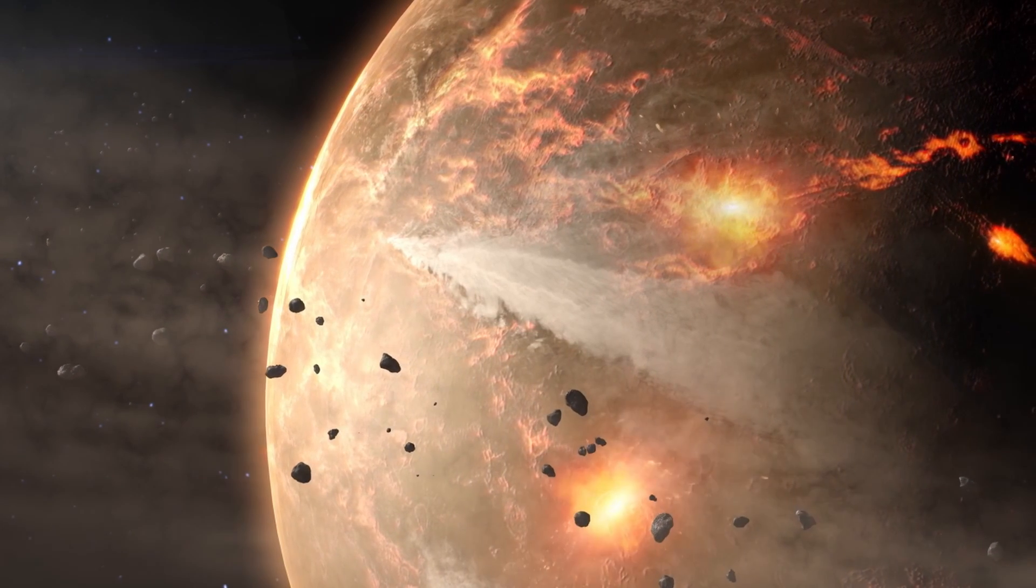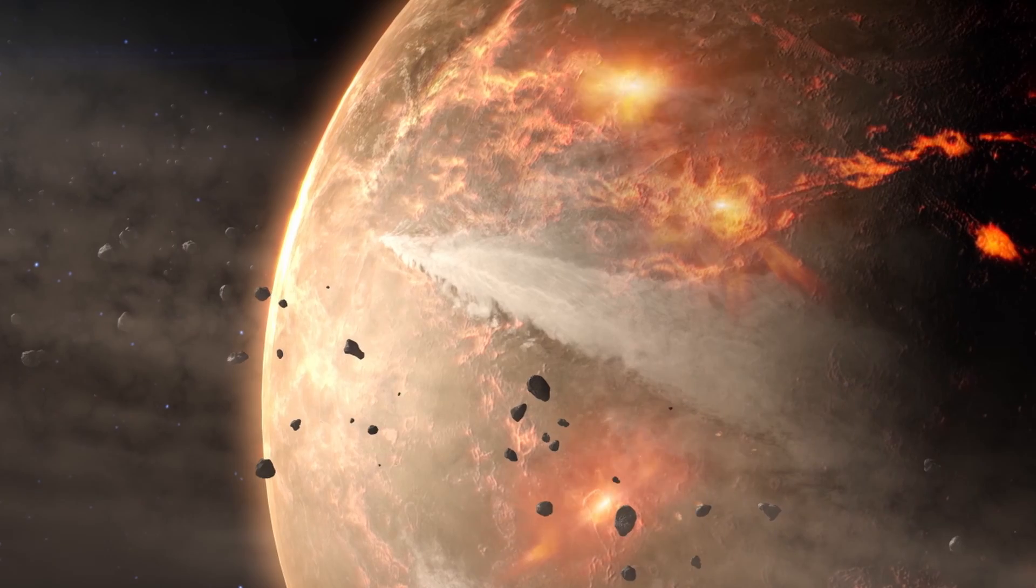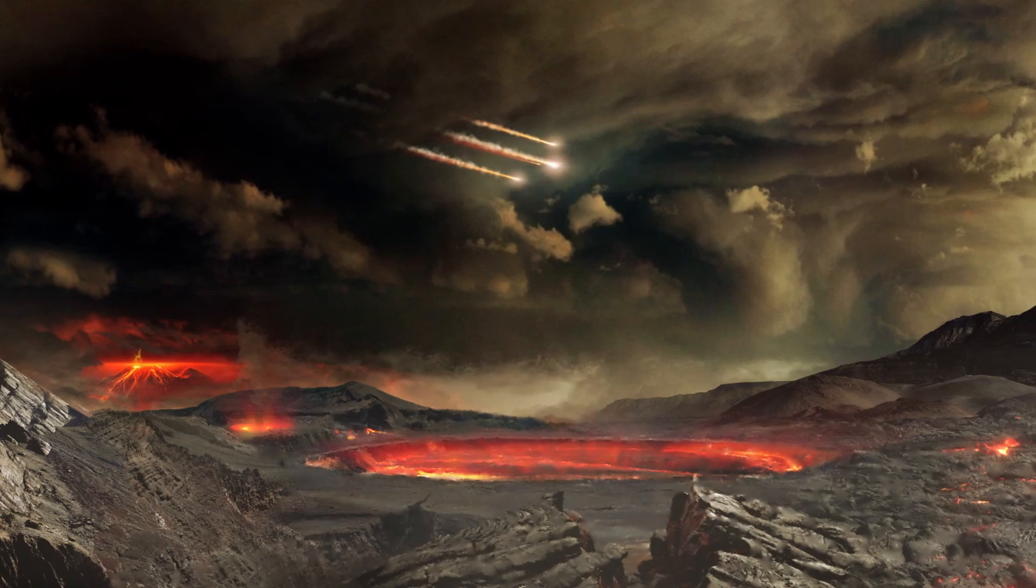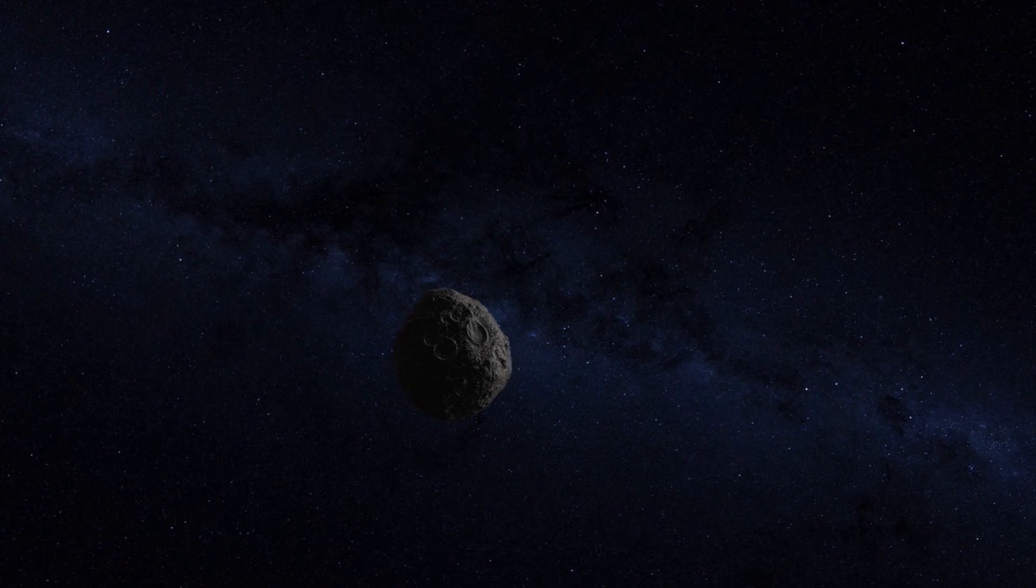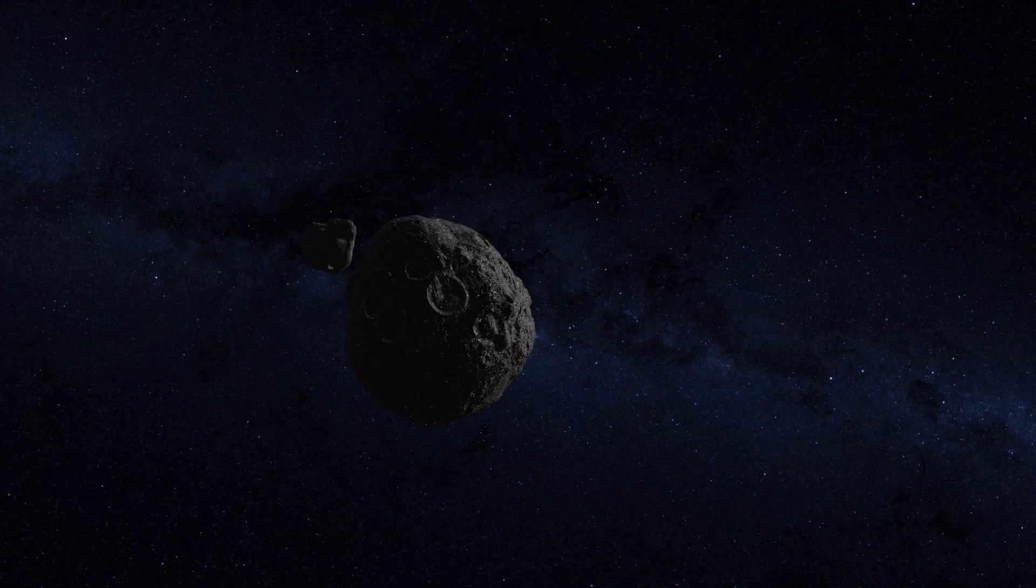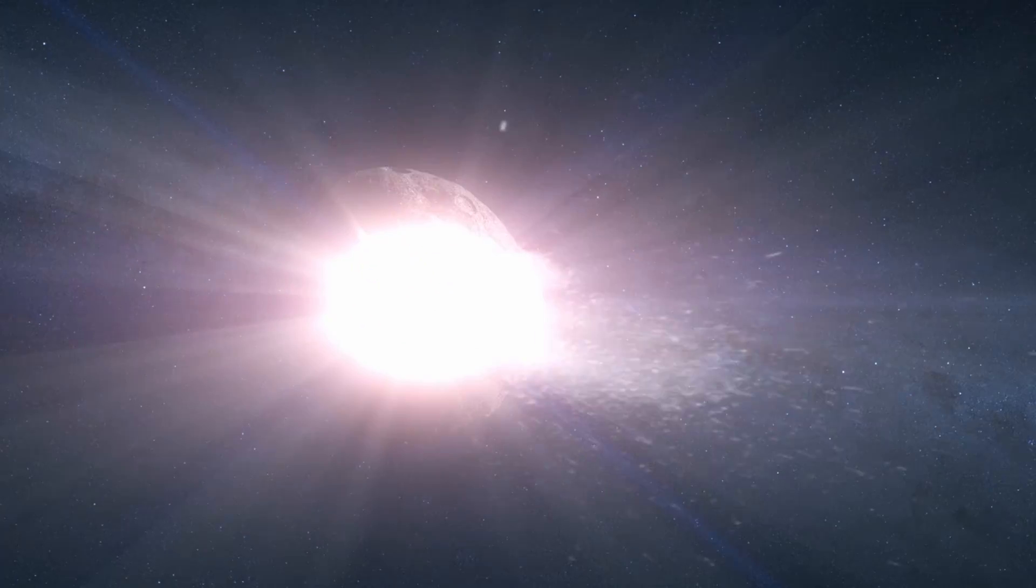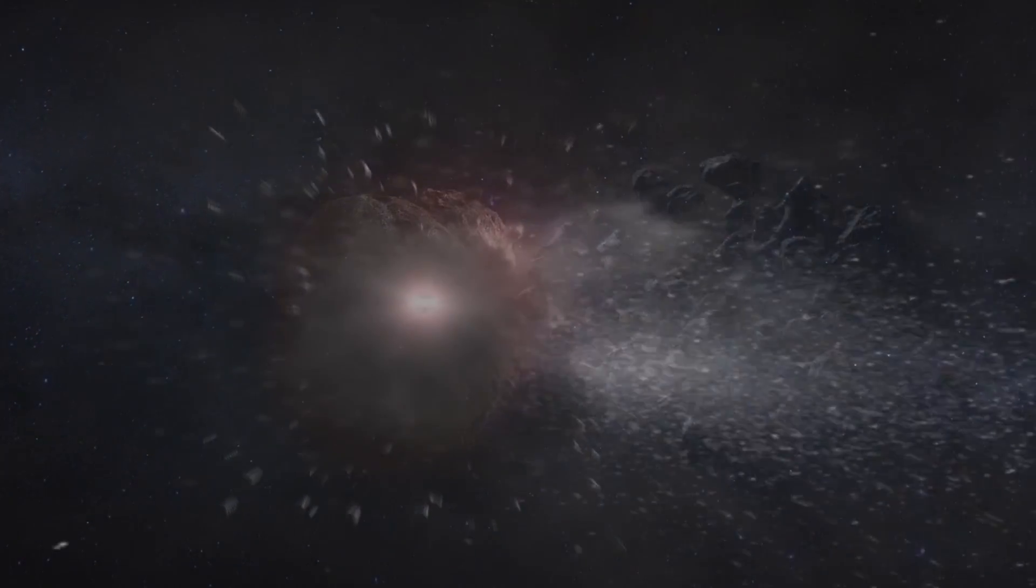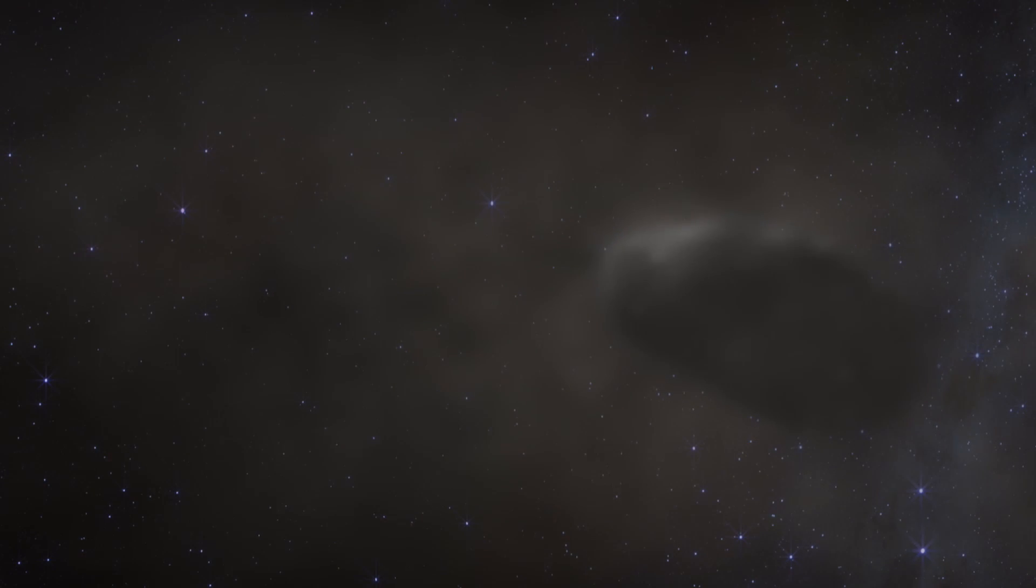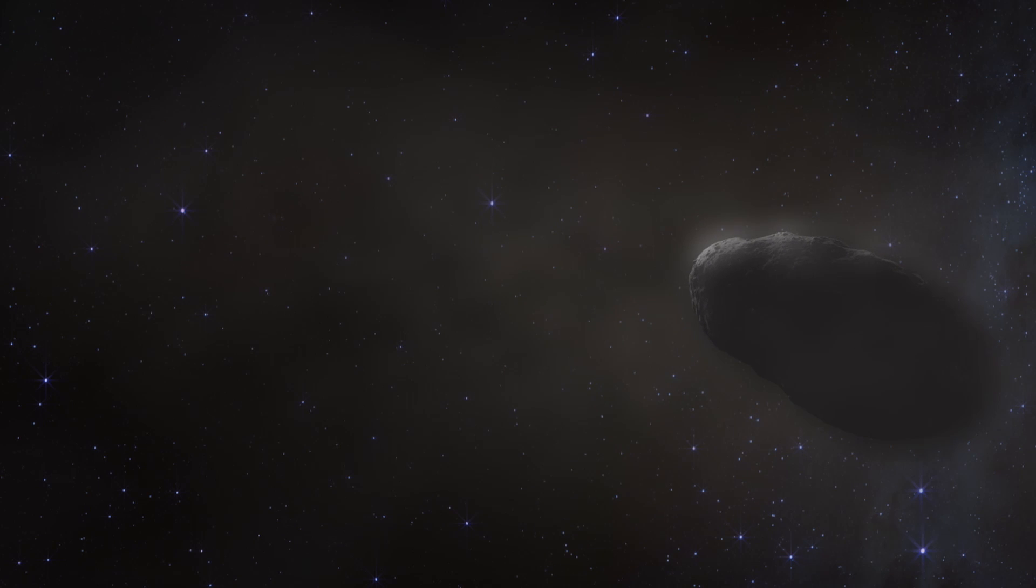New research published in Science Advances throws both of these assumptions into question. They analyzed the iron composition of Earth's interior and compared it to extraterrestrial bodies. They discovered that the composition of the Earth was almost identical to one particular type of meteorite. This meant that the Earth could not have formed from a variety of different collisions but must have been formed only from this one type.